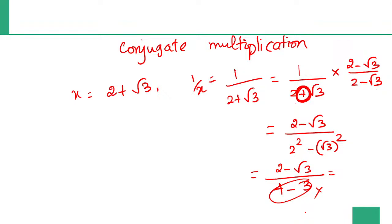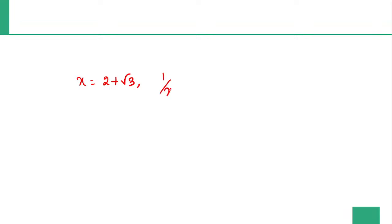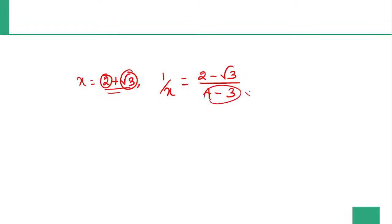The denominator is 1, so the numerator is 2 minus root 3. Therefore 1 by x equals 2 minus root 3.